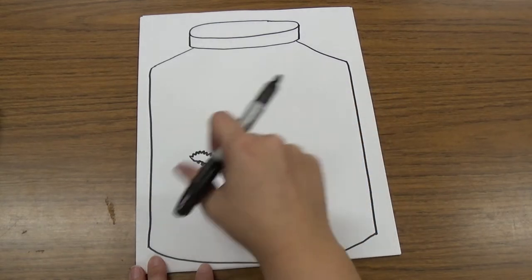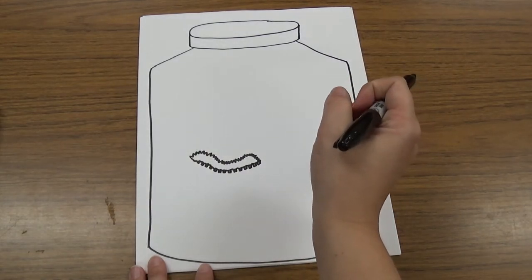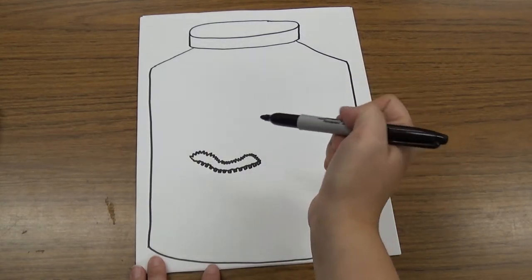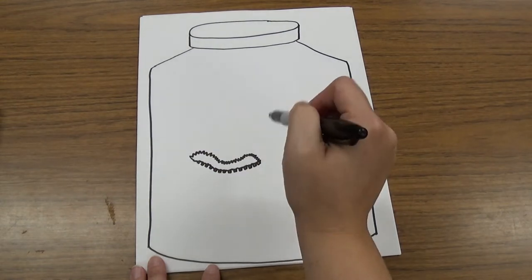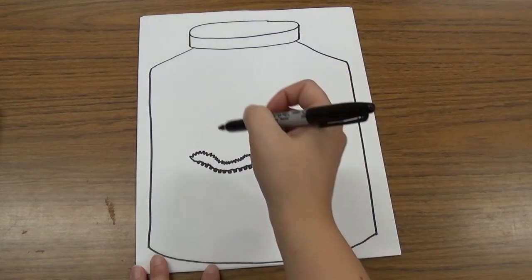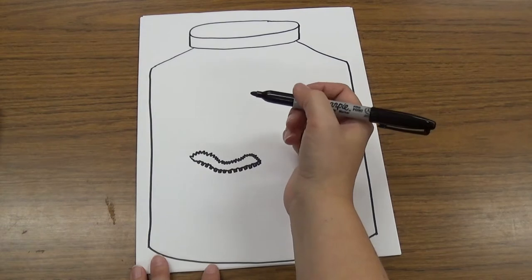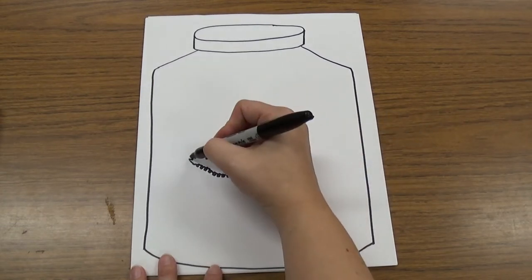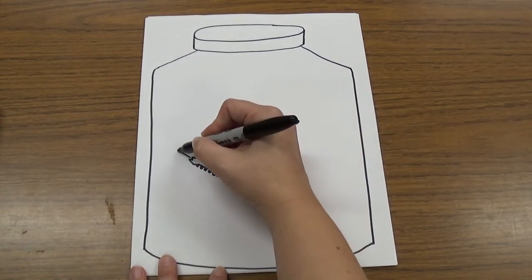Right now my caterpillar is floating in the air, but caterpillars don't float. So we're going to make something for our caterpillar to go on. I'm going to make mine on a stick. You can decide if you want it on a leaf or something, but I'm going to draw my stick coming over here.